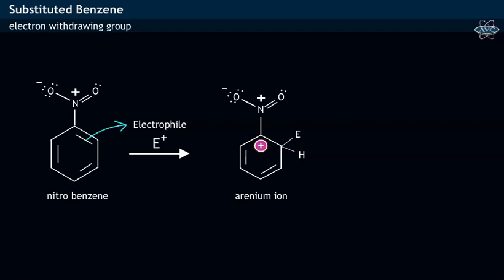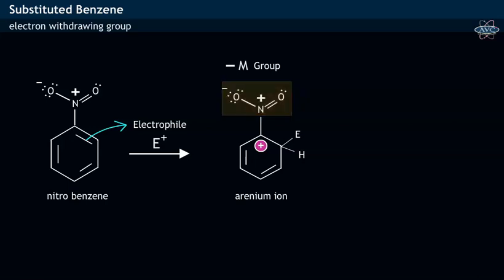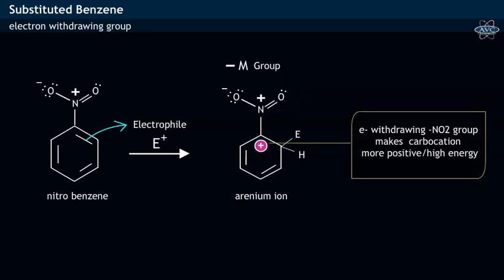It may be noticed that the carbocation is attached to a deactivating group such as the NO2 or nitro group. In the nitro group, as nitrogen bears a positive charge on it, it acts as an electron-withdrawing −M group and thereby withdraws electron density from the benzene ring. With the withdrawal of electron density from the carbocation, the positively charged carbocation becomes more positive and more energetic, making it highly unstable.